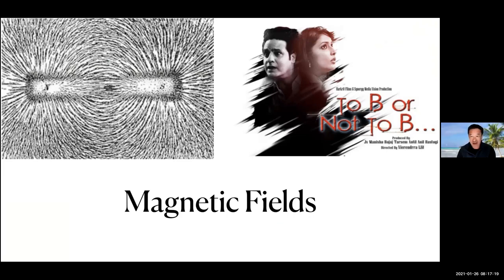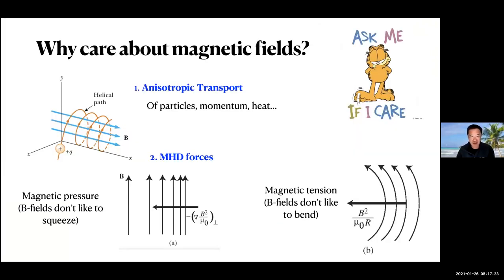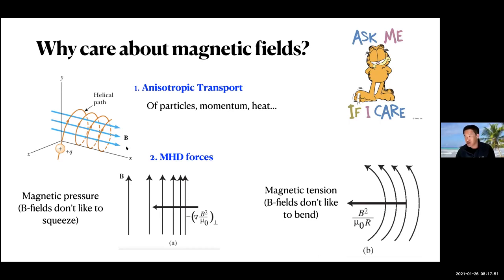On to the science: magnetic fields. Why should you care? If you're a charged particle, you experience a Lorentz force and spiral around the field, resulting in anisotropic momentum transport — anisotropic viscosity for protons, anisotropic heat transport (anisotropic conduction) for electrons. For cosmic rays, you also have confinement along field lines with interesting implications for transport. Ellen will talk a lot about pressure anisotropy on Thursday, but it's always something to keep in mind.